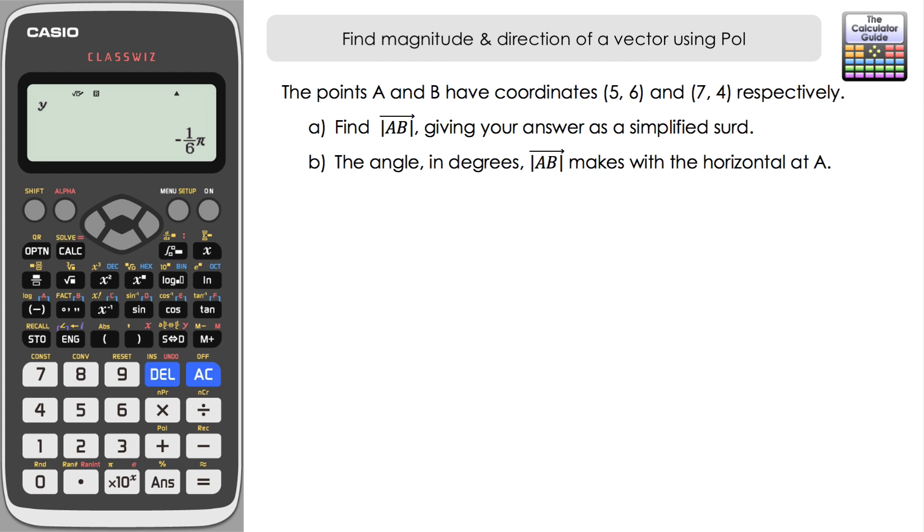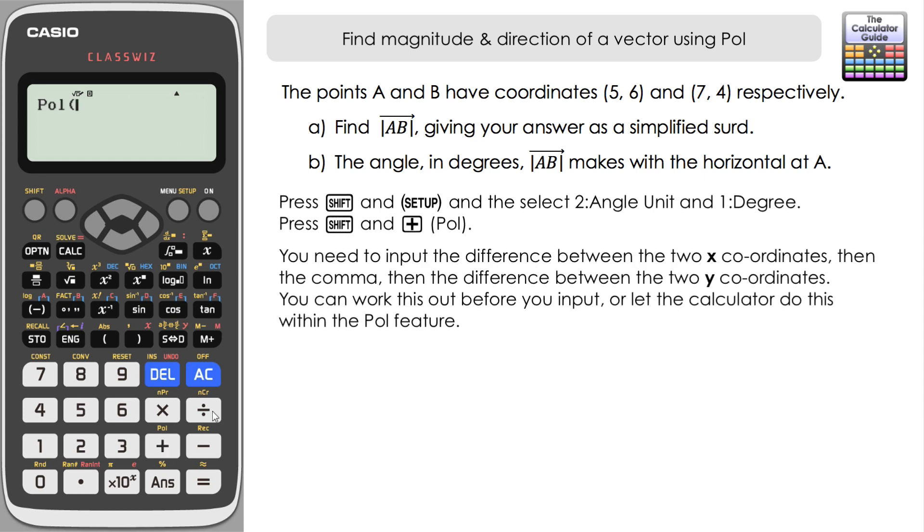Right so first thing I'm going to do this time is just change the angle unit back to degrees. We're currently in radians so it's shift and set up, angle unit and then one for degree. It's changed back to a d there, we know we've got the right unit to get our answer in degrees. Then it's shift and poll and the poll feature activated.